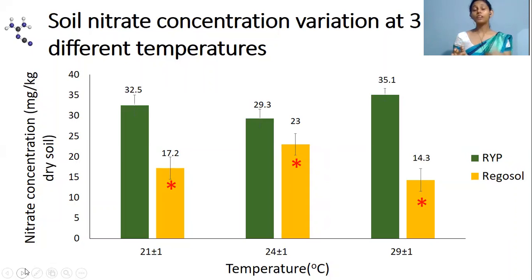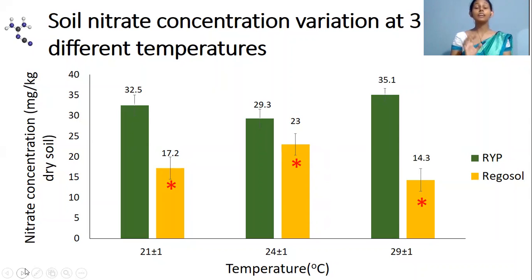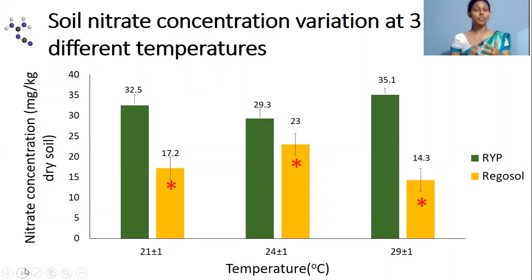RYP soil has higher organic matter and higher clay content. When organic matter and clay contents increase, DCD availability decreases. In that situation, DCD efficiency reduces.